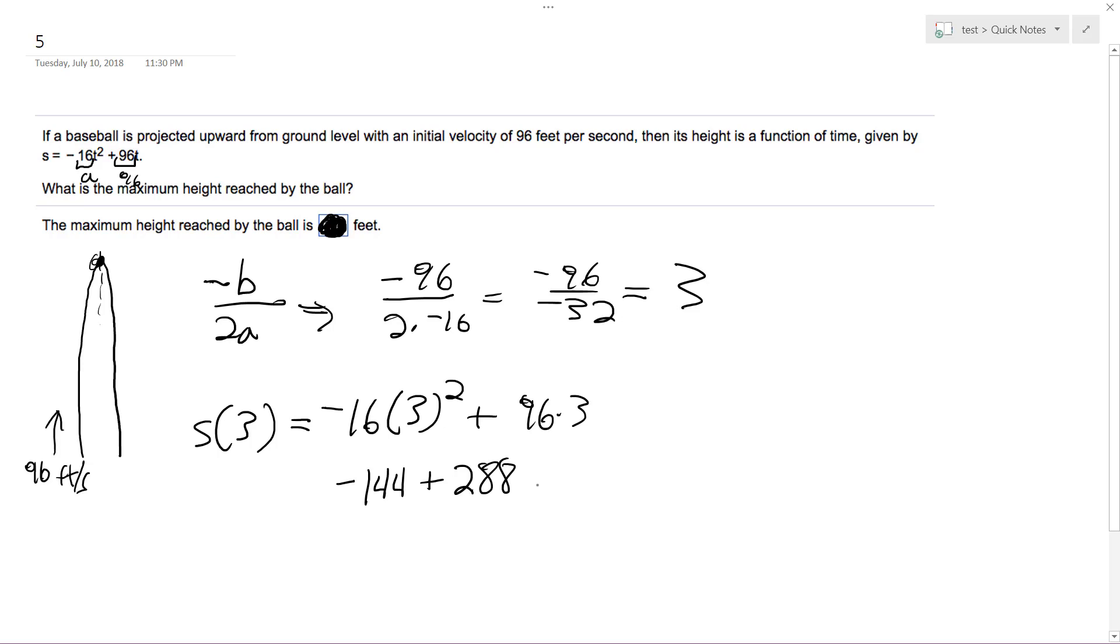As a result what I get from this is 144 feet. So the maximum height the ball reaches is 144 feet. The coordinates in this case would be 3, 144, or well actually it's not a coordinate, but after 3 seconds the ball hits 144 feet.